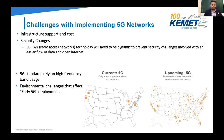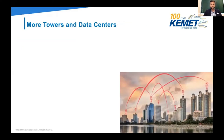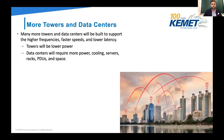These high frequencies are easily absorbed by humidity, rain, and other objects in the area, meaning they don't travel as far. So initially, 5G coverage will be limited to outdoor or pedestrian-centric areas where frequencies can easily reach users. More towers and data centers will be built to support these high frequencies and faster speeds. The towers will be low power, and the data centers will require more power, cooling, more servers, and space — and this is where a lot of our products come into play.